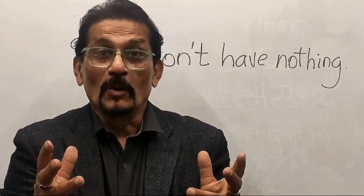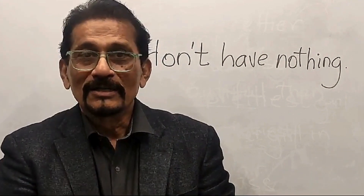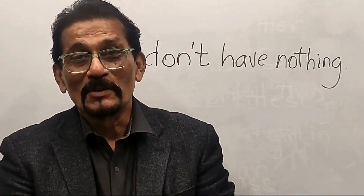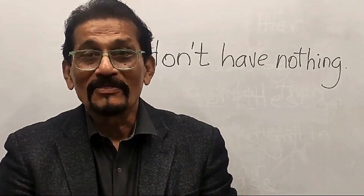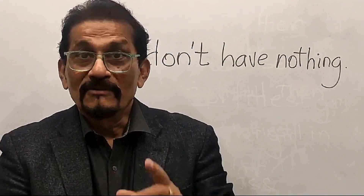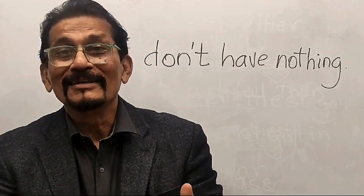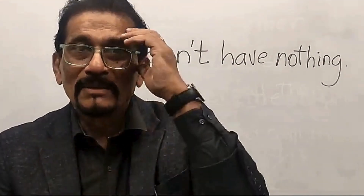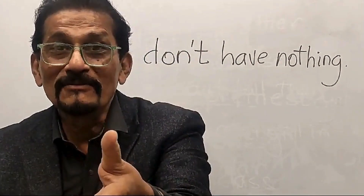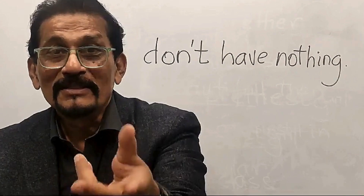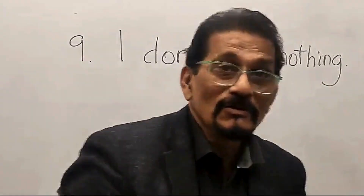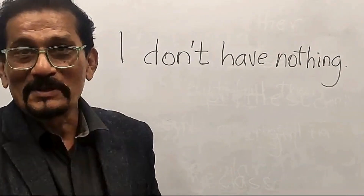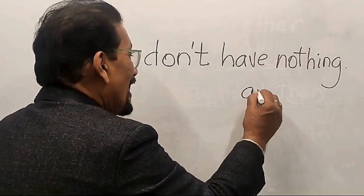Somebody knocks at my door and says, 'Do you have something to eat?' I say, 'I'm so sorry, bro. I don't have nothing.' But wait — 'I don't have nothing' is a direct translation blunder. How can you use double negatives? Double negatives don't make a positive in English. Therefore, you can't say 'don't have nothing.' What will you say? 'I do not have anything.' That's the correction — 'I don't have anything.'